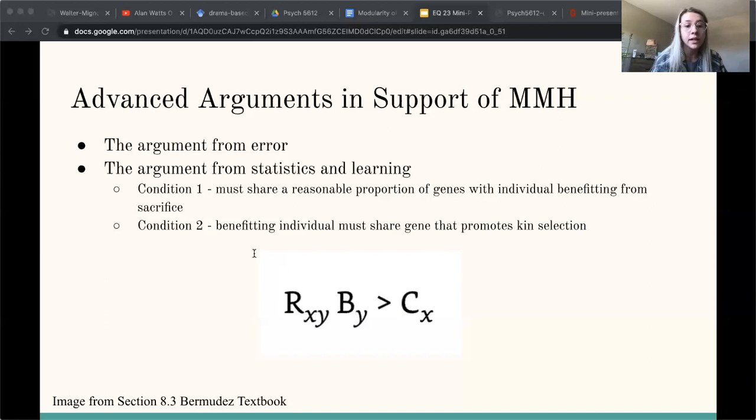So in total, this kin selection equation promotes massive modularity in a way that explains how kin selection can get embedded into a population in order to understand the fitness and the fitness relationships between certain species throughout evolution and natural selection. That is all I have. Thank you all for listening.